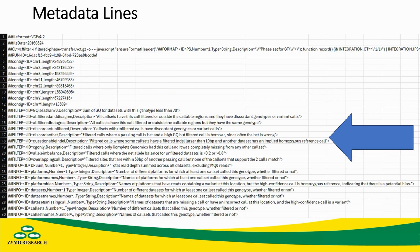Following that, we see a block of lines all starting with the keyword FILTER. This will describe all the various reasons that a variant might have been filtered out according to this pipeline, and which terms will be potentially present in the filter column to indicate when this happened.